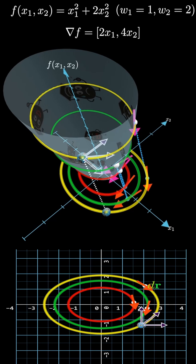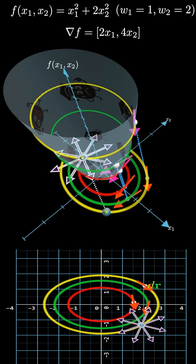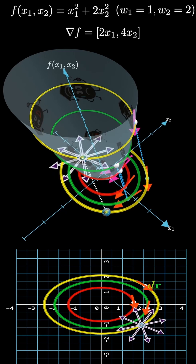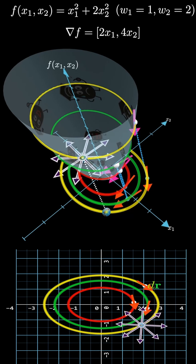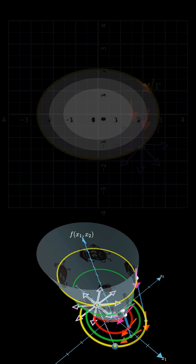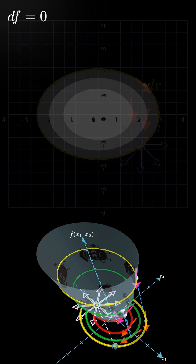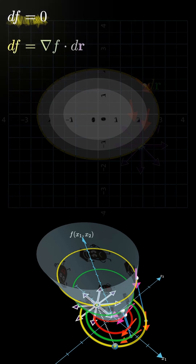Now let's look at the total differential df. The total differential df represents the change in f when both x1 and x2 change simultaneously. But if we're moving along the contour, df equals 0, since f does not change. And by definition, that is the dot product of the gradient and the displacement vector dr. So the equation equals 0.